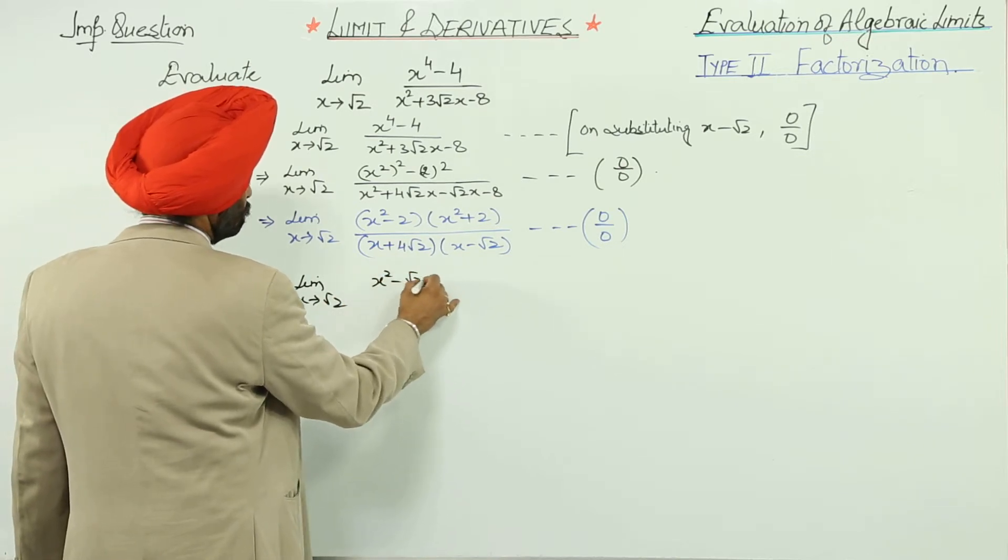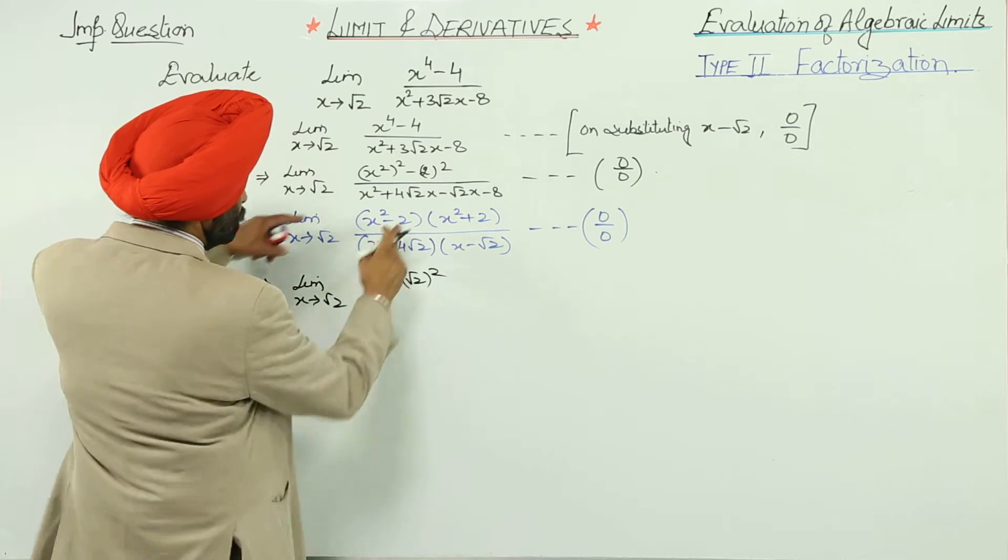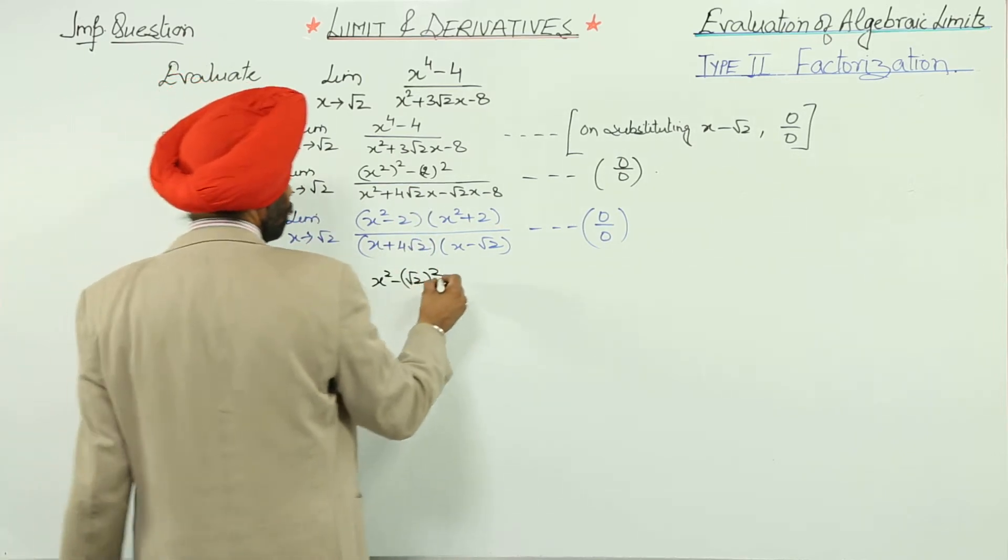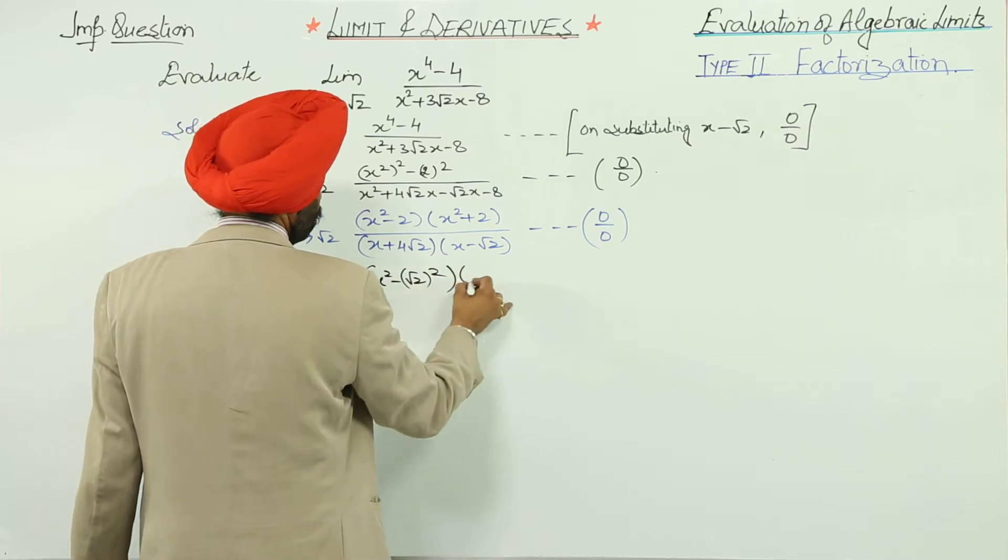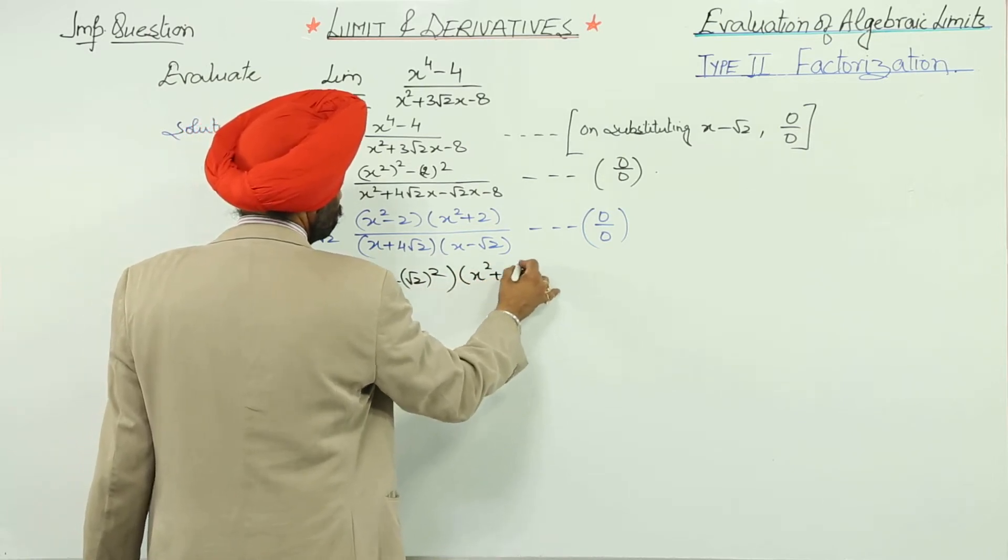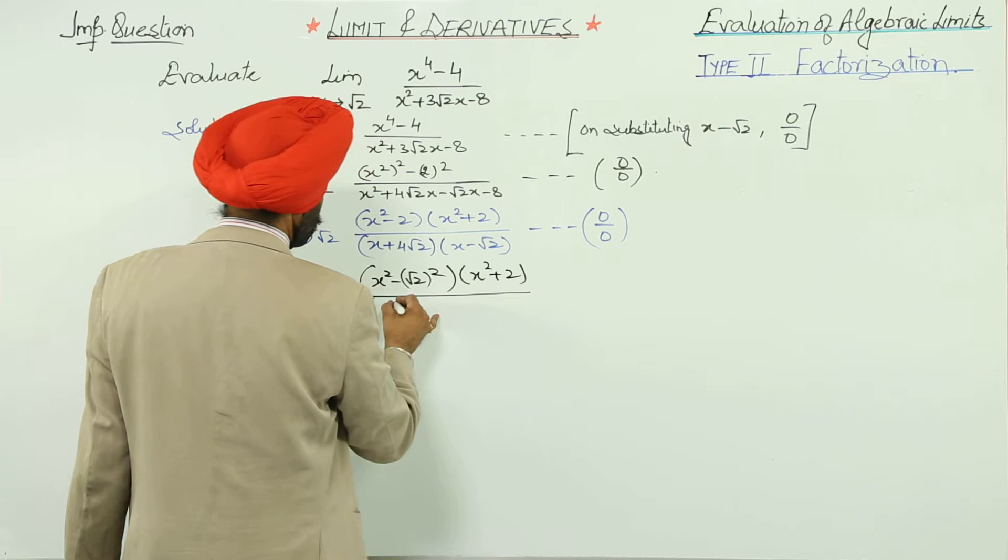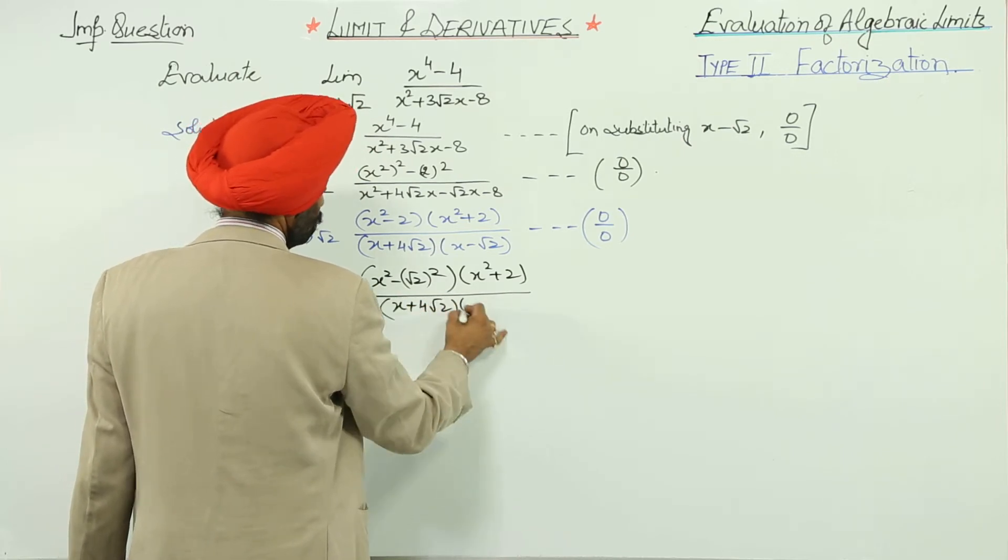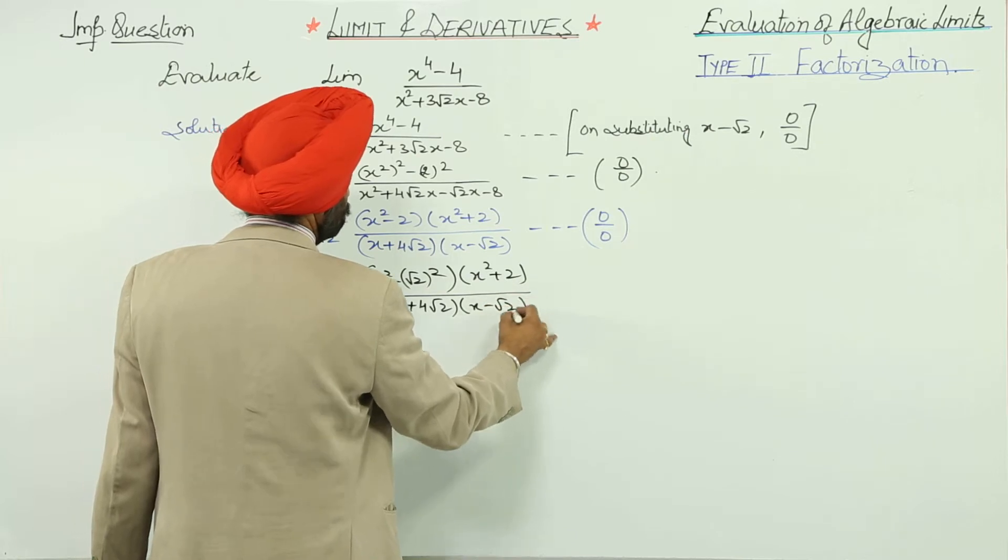x square minus root 2 whole square to this part now. We can write it x square minus 2 whole square times x square plus 2 upon x plus 4 root 2 times x minus root 2.